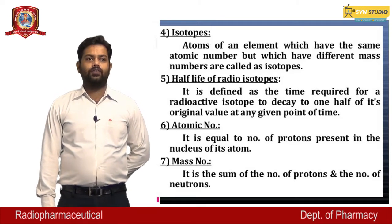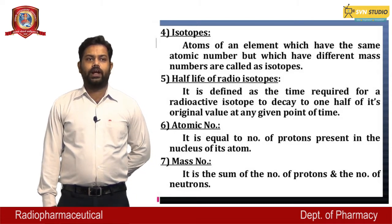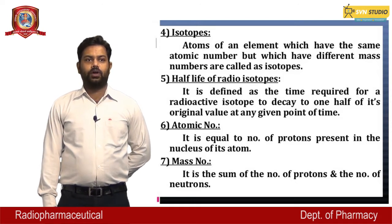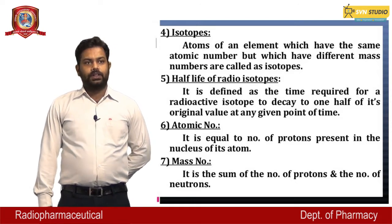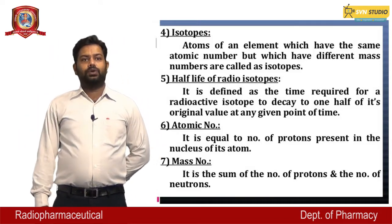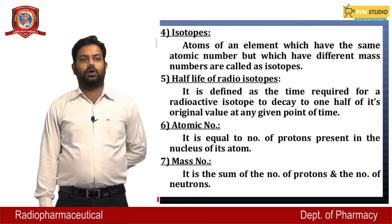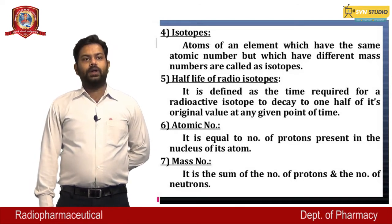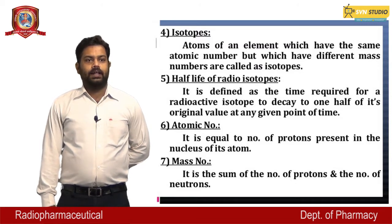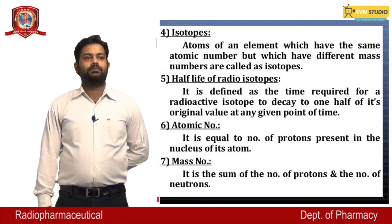Half-life of radioisotopes may be defined as the time required for a radioactive isotope to decay to one half of its original value at any given point of time. Atomic number is equal to the number of protons present in the nucleus of an atom. Mass number is the sum of the number of protons and the number of neutrons.